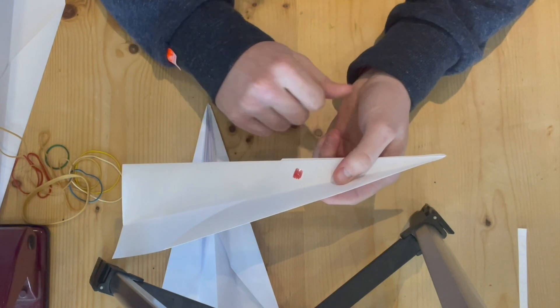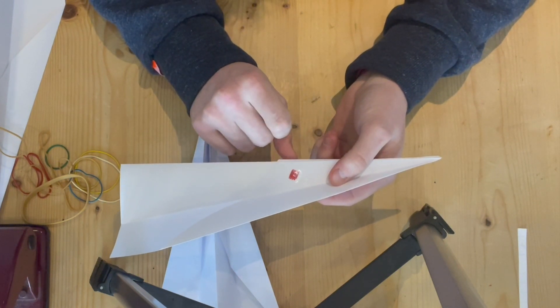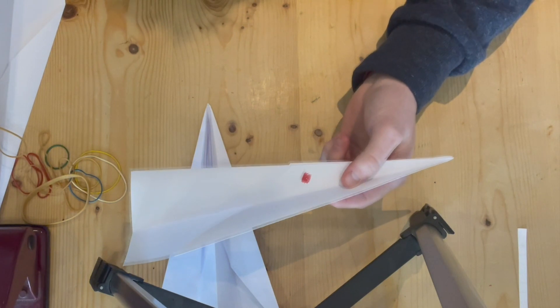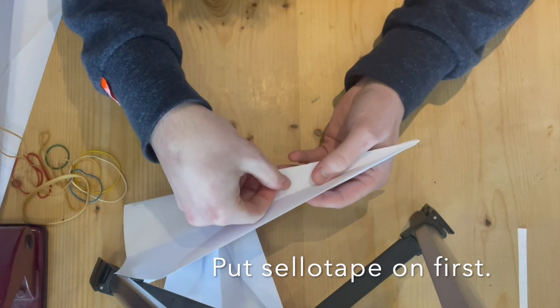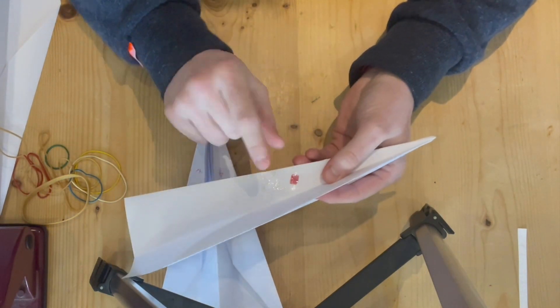It's also worthwhile noting that you may want to put sellotape on it just to strengthen where you're going to put a hole. You'll want to do that on both sides.